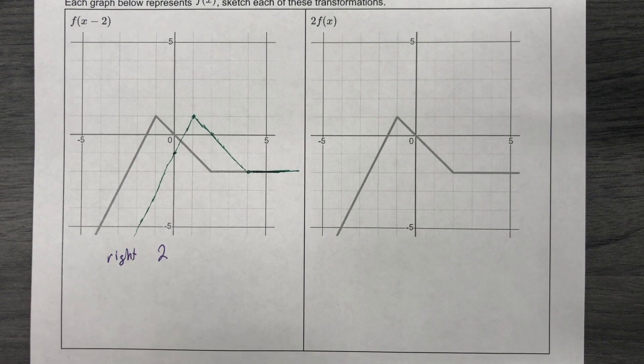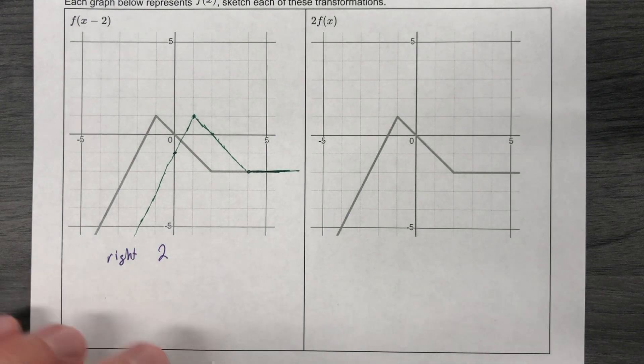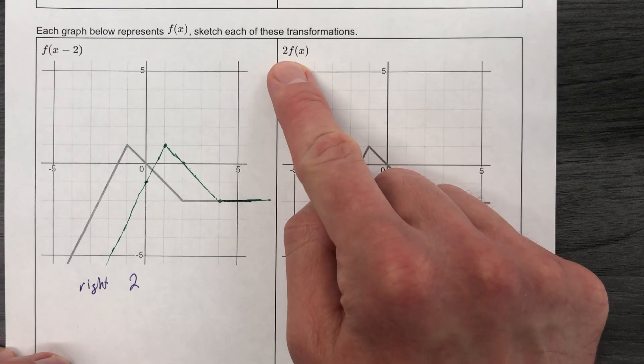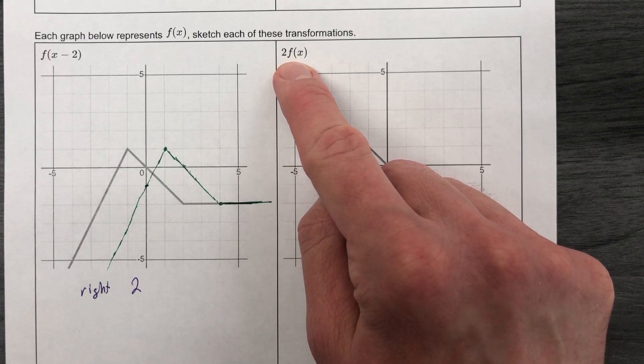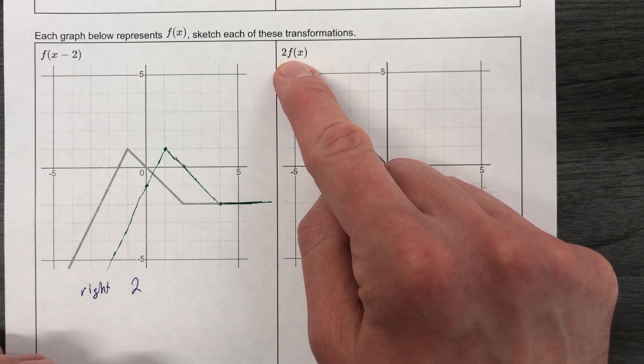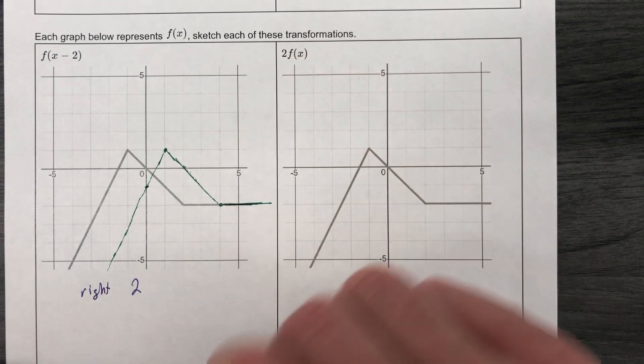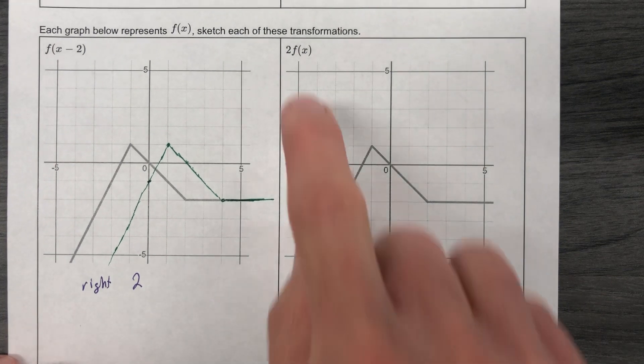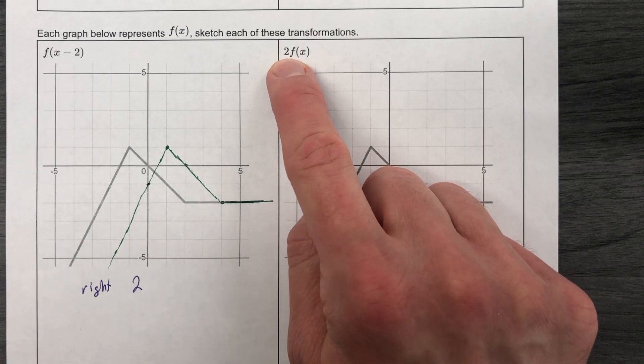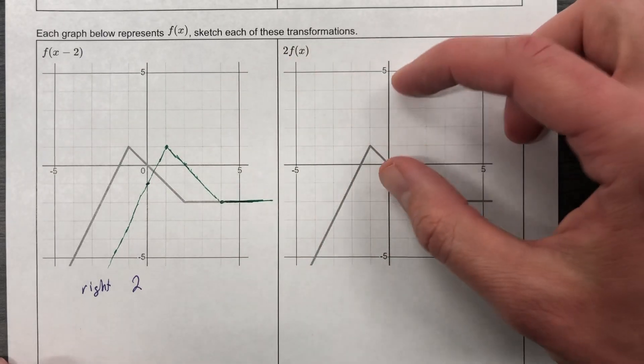So the first one was pretty straightforward, and now we're going to get to the second one. And we have another 2, but the 2 is in a different place. So this 2 is in the front, and we have to ask ourselves, well, what does that mean when the 2 is in the front? Well, that means that we have, and we've gone through this, it means we have a vertical stretch or a vertical shrink. This one, actually, since it's 2, positive 2, it's going to stretch this.